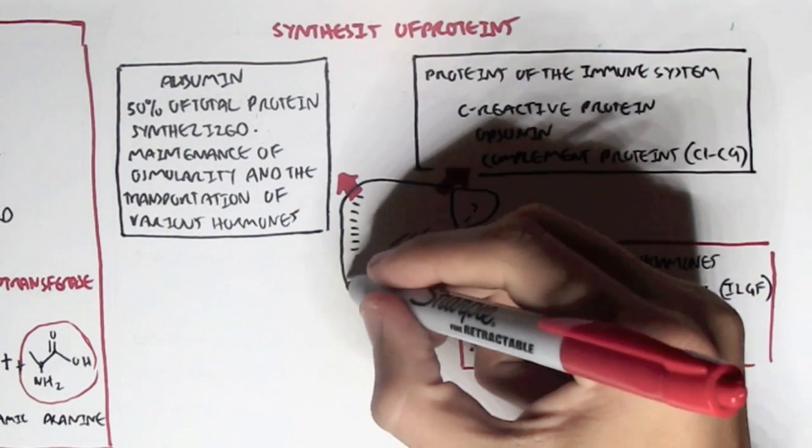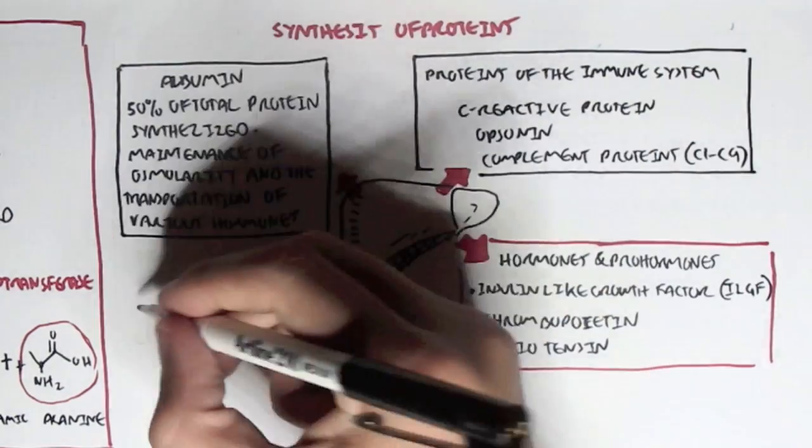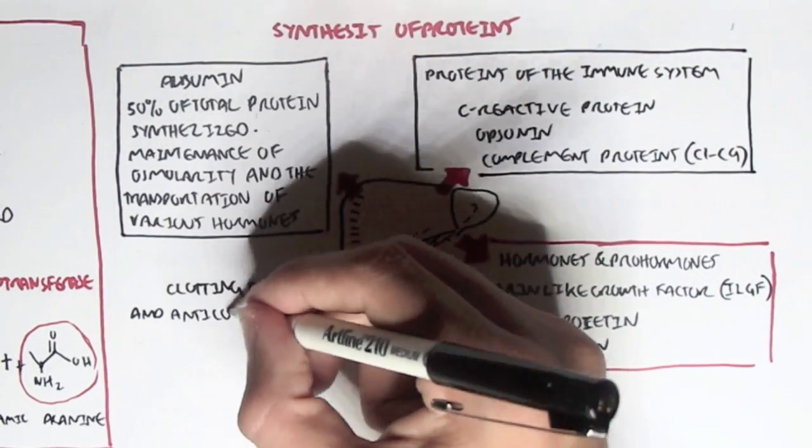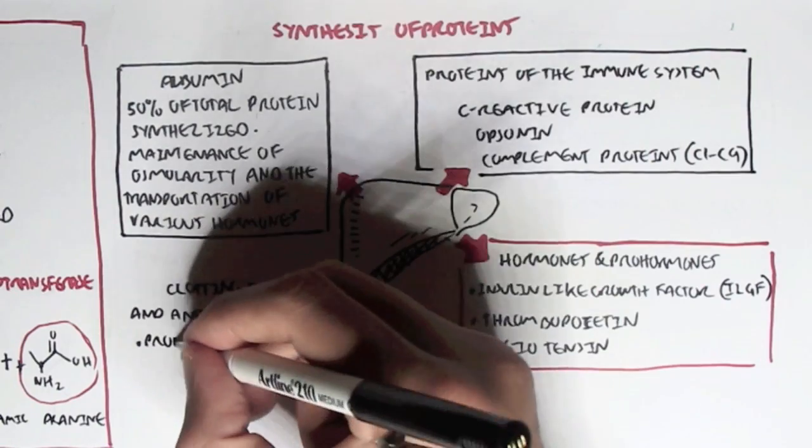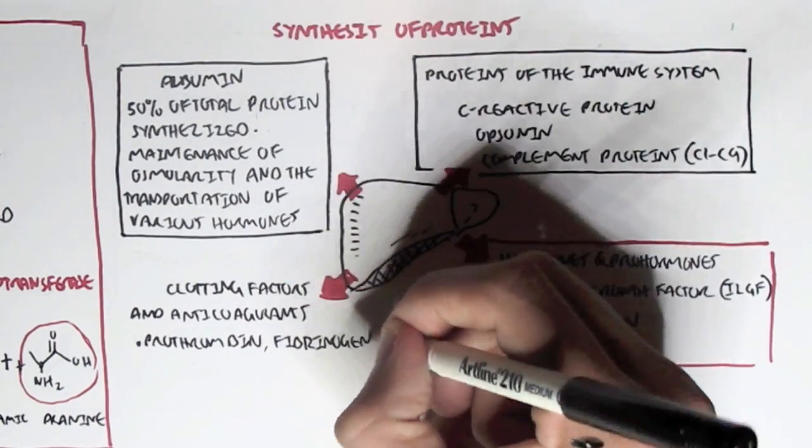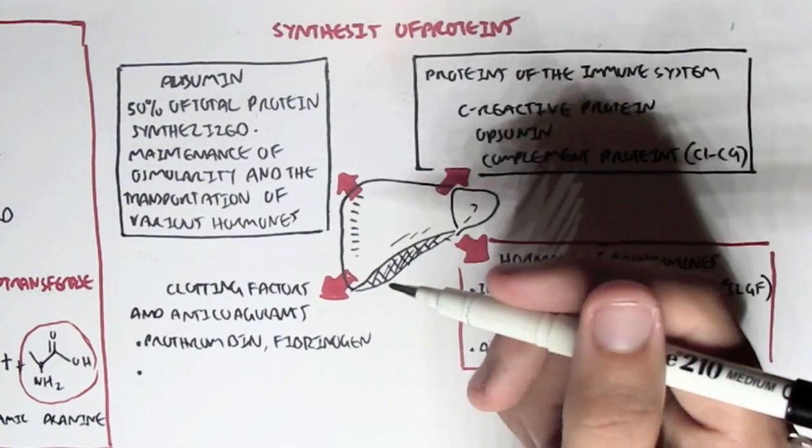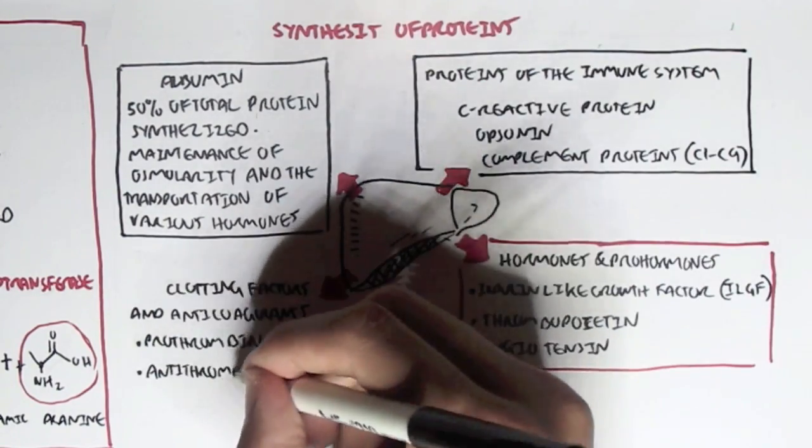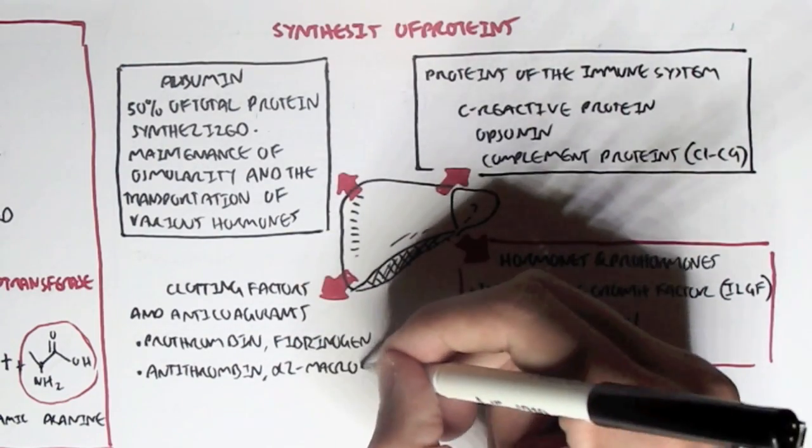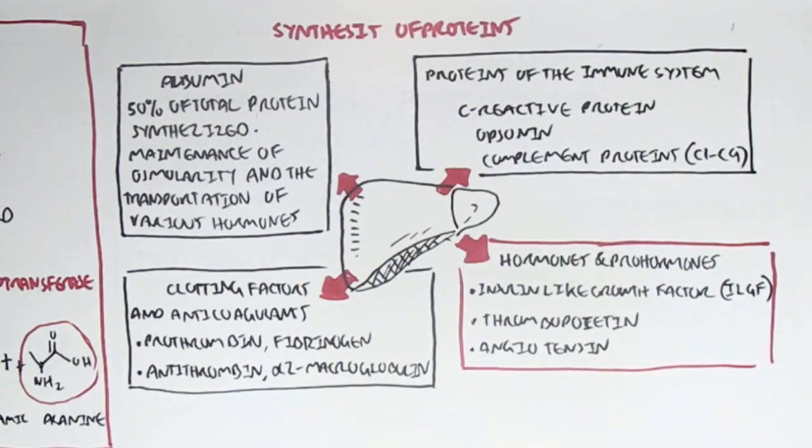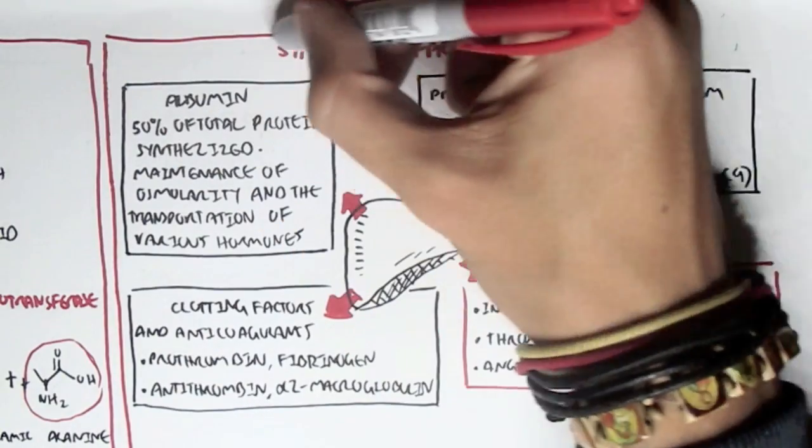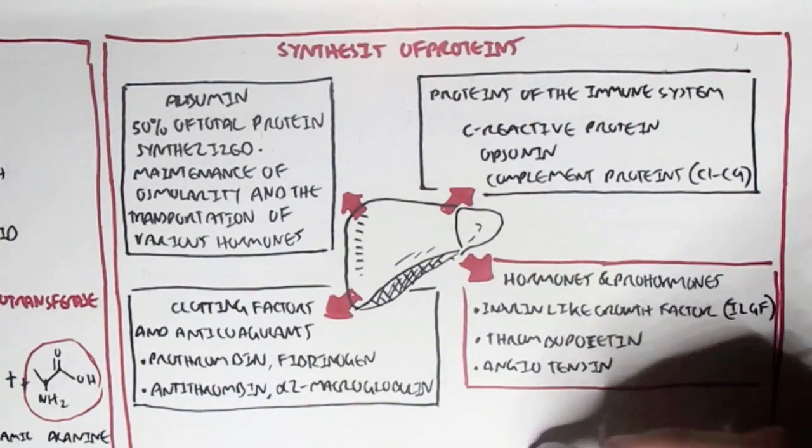The liver also synthesizes proteins that are clotting factors and inhibitors of coagulation, anticoagulants. These are prothrombin, fibrinogen, and also antithrombin and alpha-2-microglobulin. Prothrombin and fibrinogen, you may have heard from hemostasis in the repair of a damaged blood vessel.